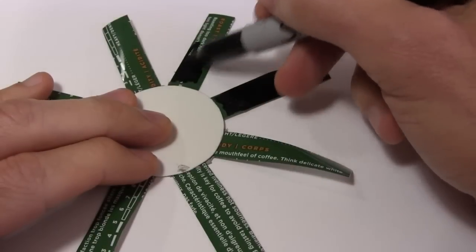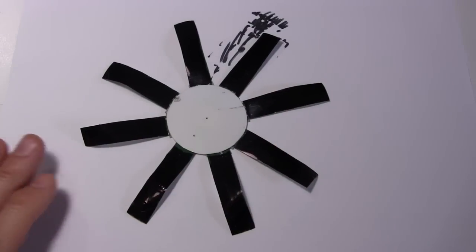To get more sunlight absorbed to produce more heat, I color the plastic sides black. You can see a big improvement.